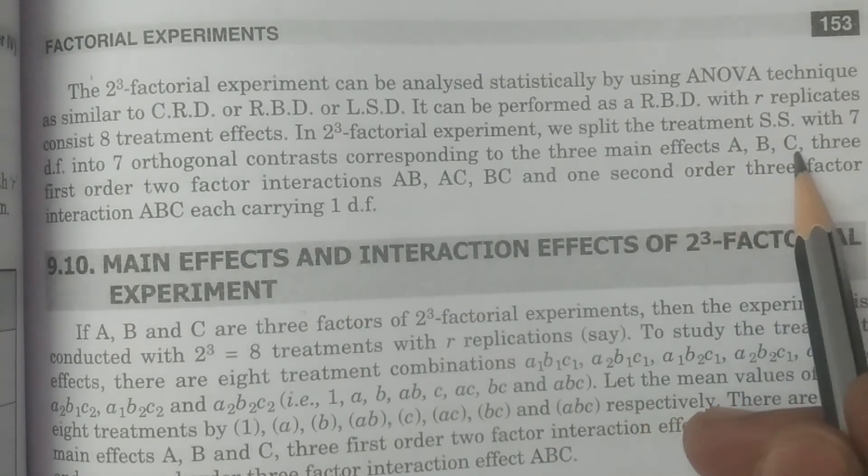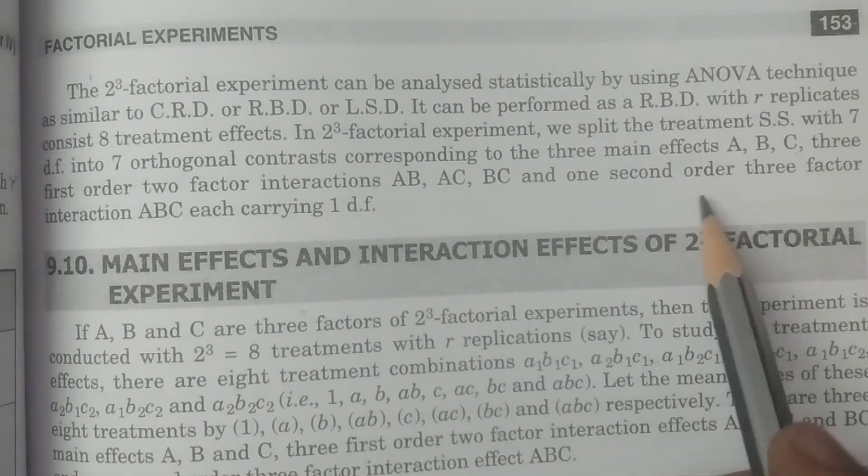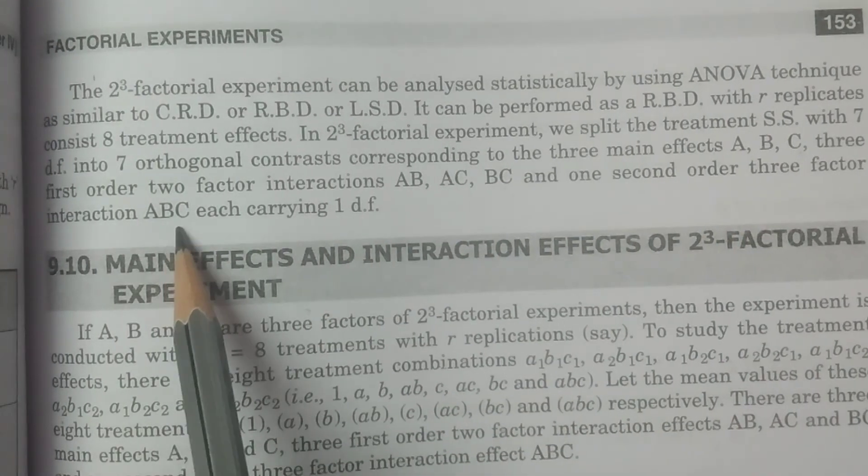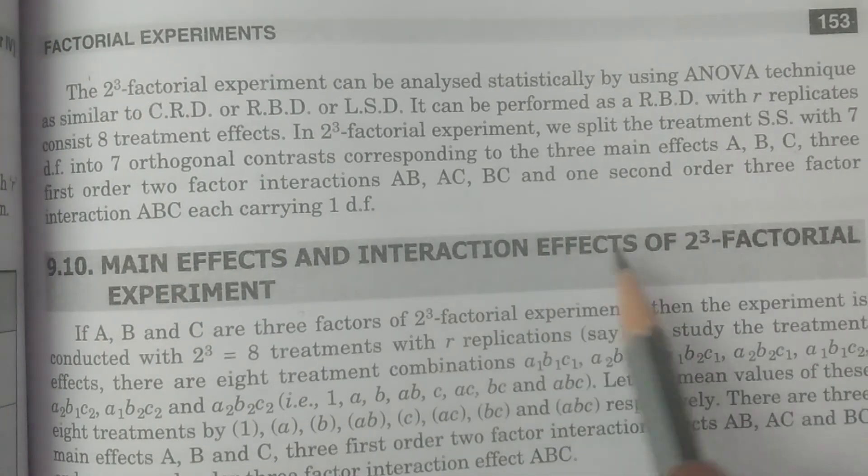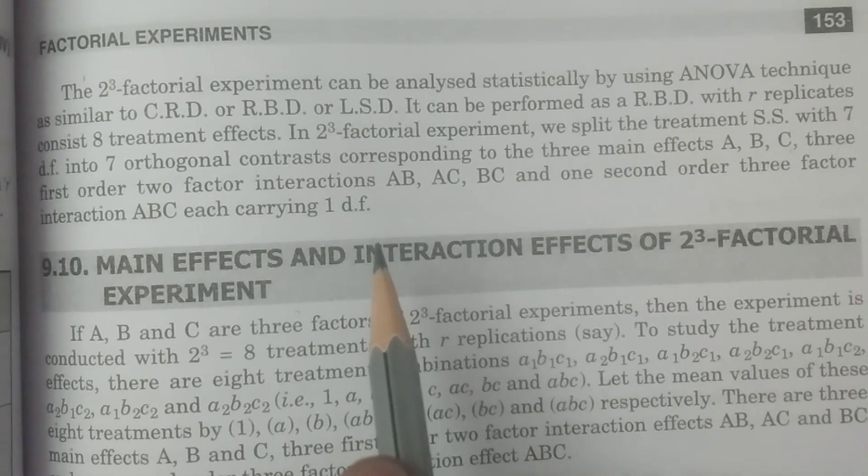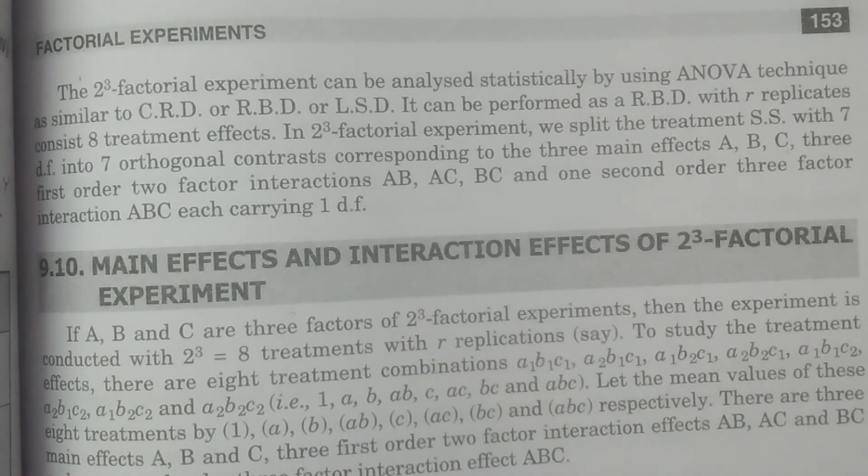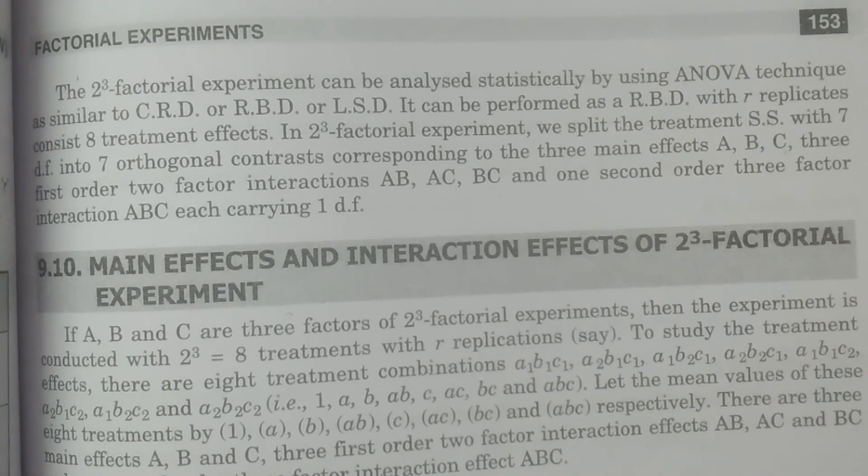Main effects A, B, C. First order interactions AB, AC, BC. Second order interaction ABC. All carries, these are seven, seven carries with one degree of freedom each. So this is what you have to understand in the two cube factorial experiment. This is the definition of two cube factorial experiment. Thank you.